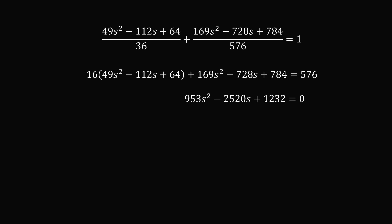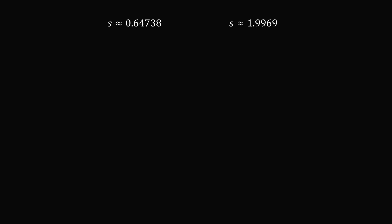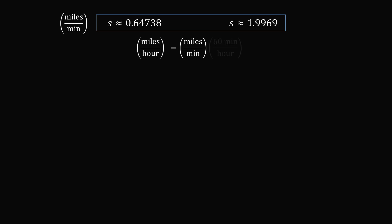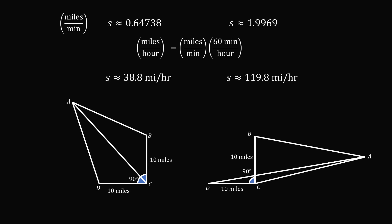Since it's the same quadratic from Method 1, we already have the solutions and approximate values. Converting from miles per minute to miles per hour by multiplying by 60, we get S ≈ 38.8 miles per hour or S ≈ 119.8 miles per hour. Arguably 38.8 mph is the most reasonable answer — it's a reasonable speed and corresponds to the illustrated diagram — but mathematically 119.8 mph also satisfies all the initial conditions with a slightly different diagram.